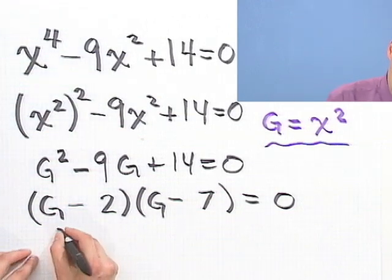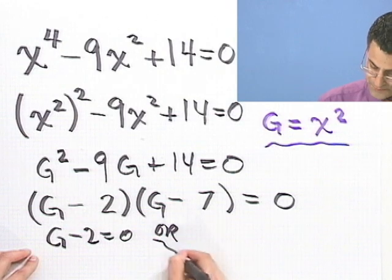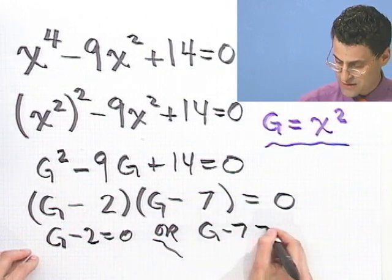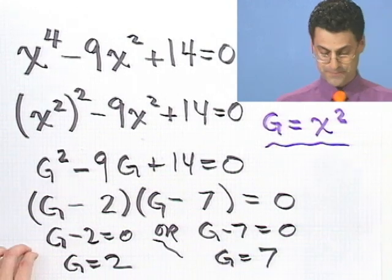And now I want to solve this. So either g minus 2 equals 0 or g minus 7 equals 0. So what we have is g equals 2 or g equals 7.